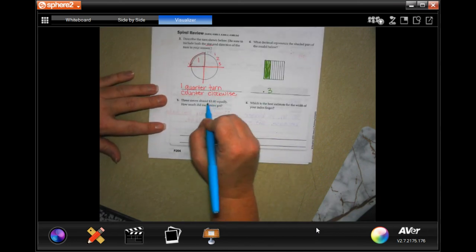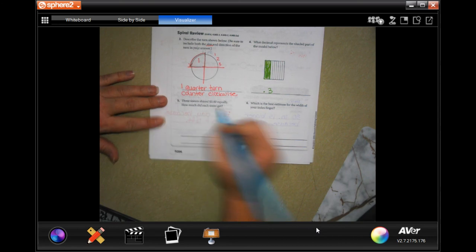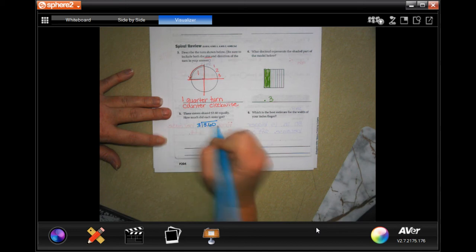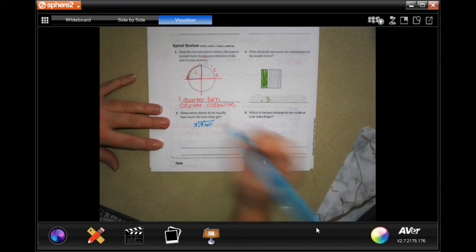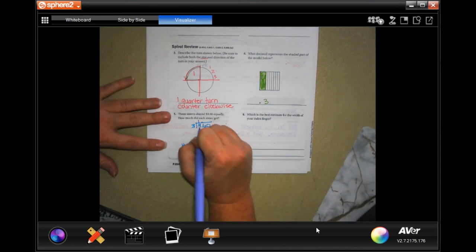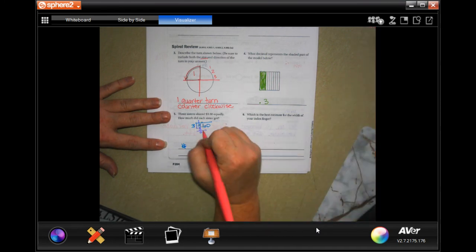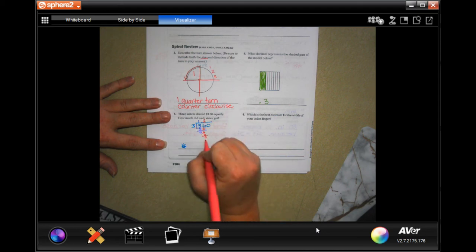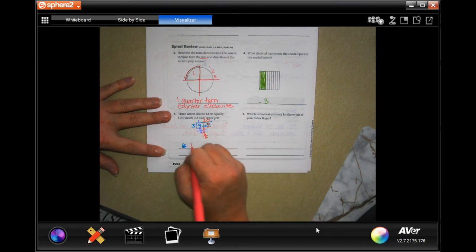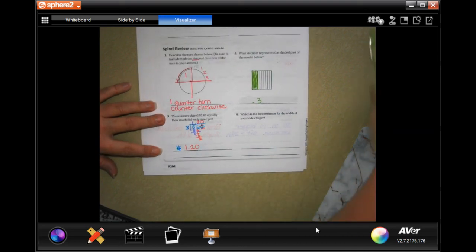3 sisters shared $3.60 equally. How much did each sister get? 3 goes into 3 one time. 1 times 3 is 3. Subtract get 0. 0 is definitely smaller than 3. So I'm going to bring down my 6. 3 goes into 6 two times. 2 times 3 is 6. Subtract get 0. Now because I ended up at 0 and I only have one 0 left, I can just move that 0 up. $1.20.